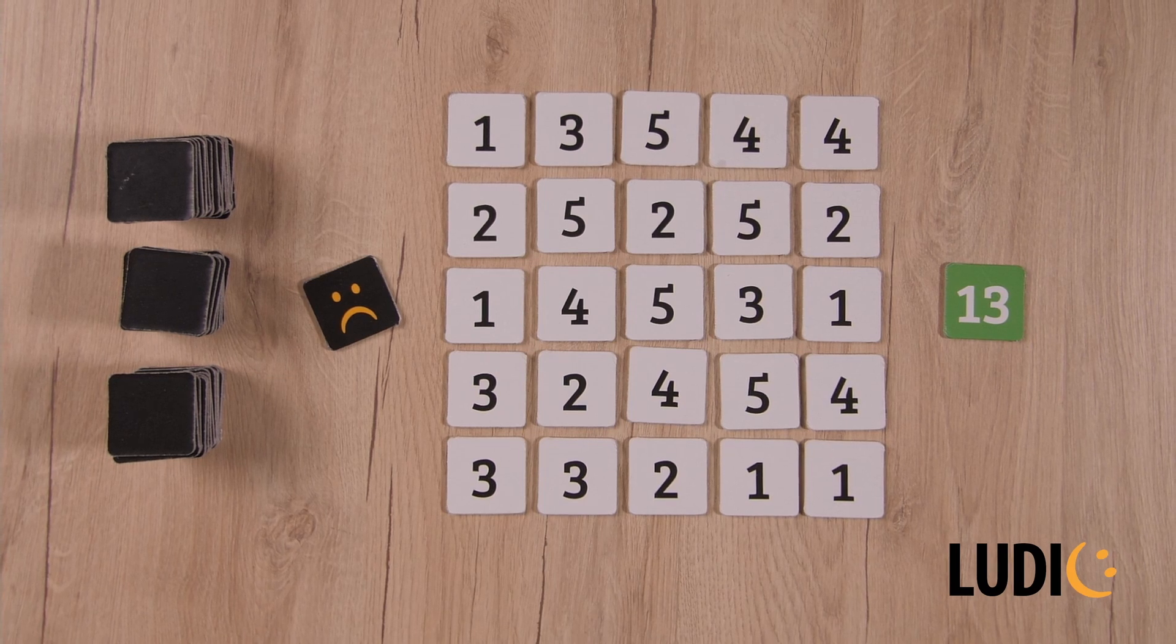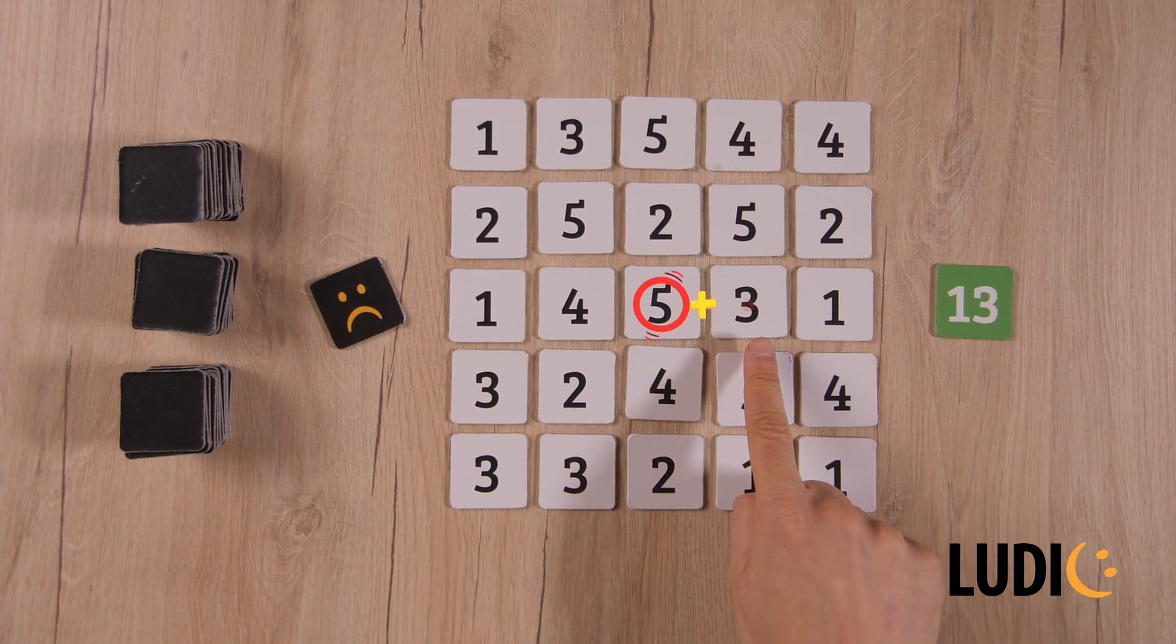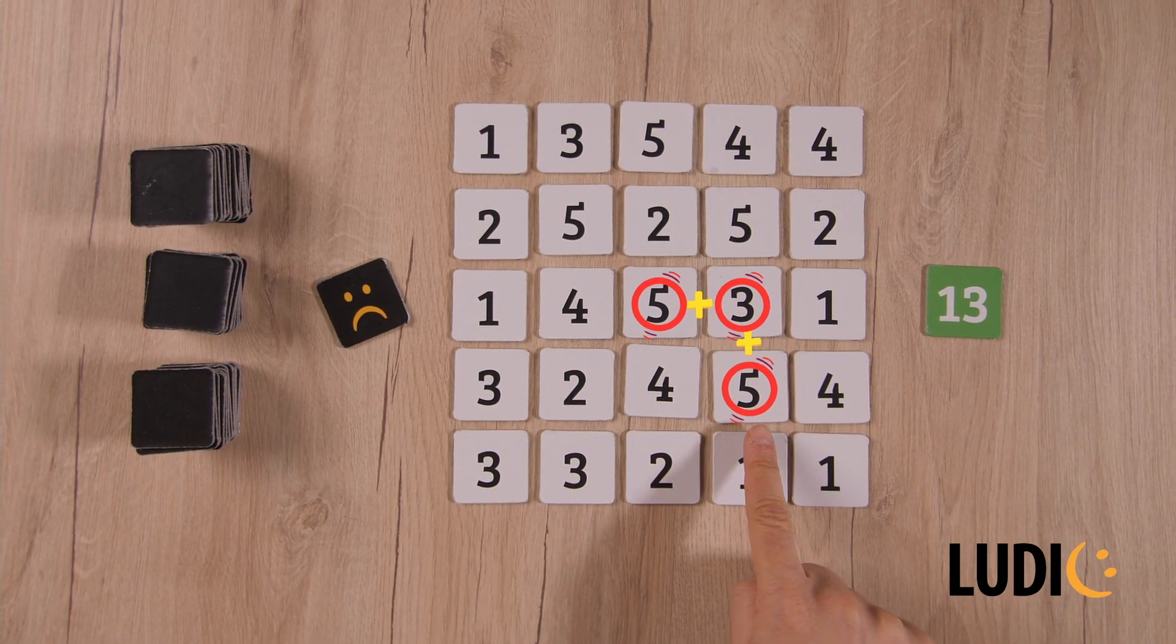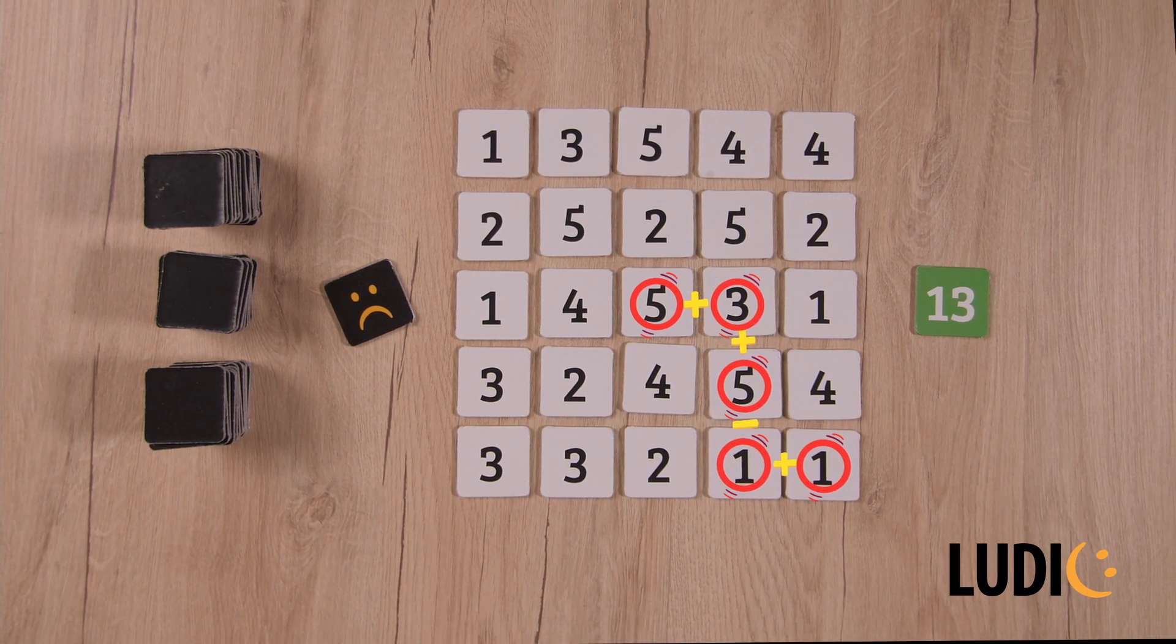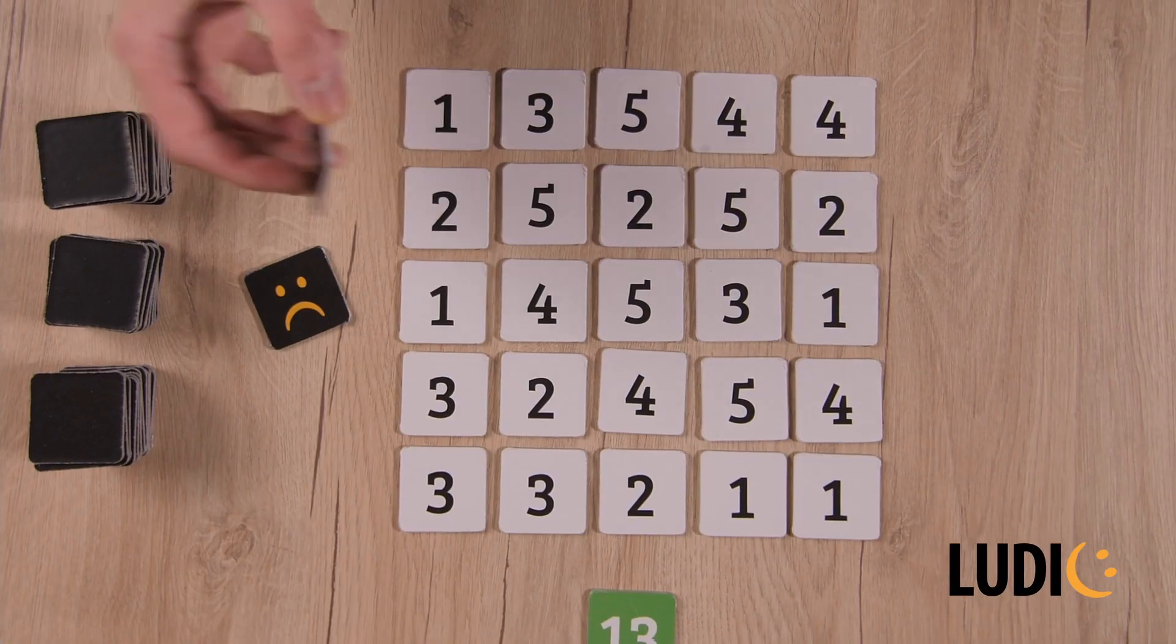And show the other players the route found, pointing it out with their finger. 5, plus 3, plus 5, minus 1, plus 1, equals 13. Correct! If the calculations are correct, that player wins the goal tile. Let's play again.